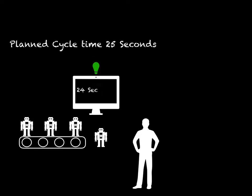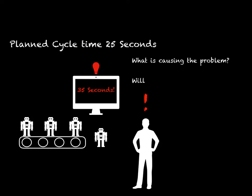Measure planned cycle time continuously on your production line. This will give you a measure of your process stability. It also helps with operator empowerment. If the target cycle time has not been met, problem solving techniques are required in order to meet the demand.